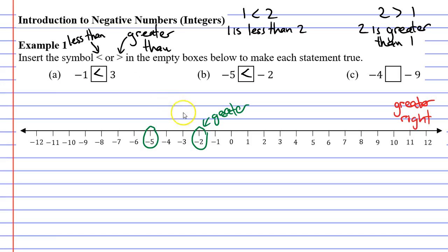Finally, moving on to question C. We have the numbers negative four and negative nine. So, negative four is closer to the right, it is the greater number. So, we can say, well, negative four is greater than negative nine.